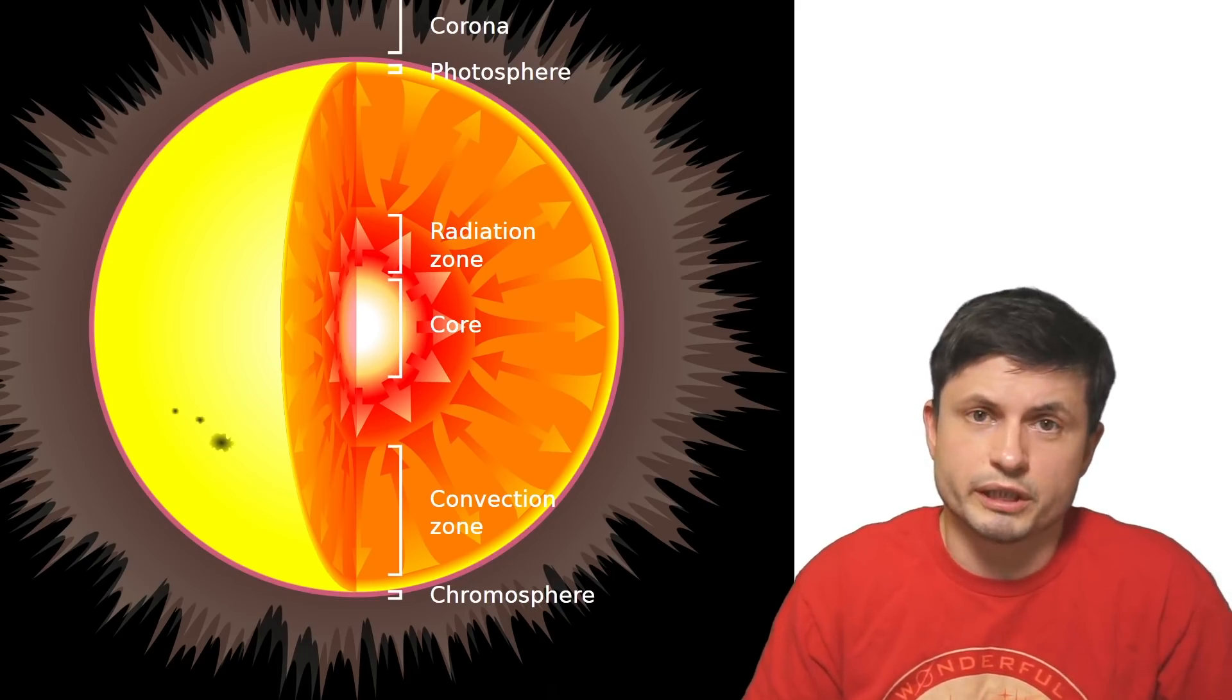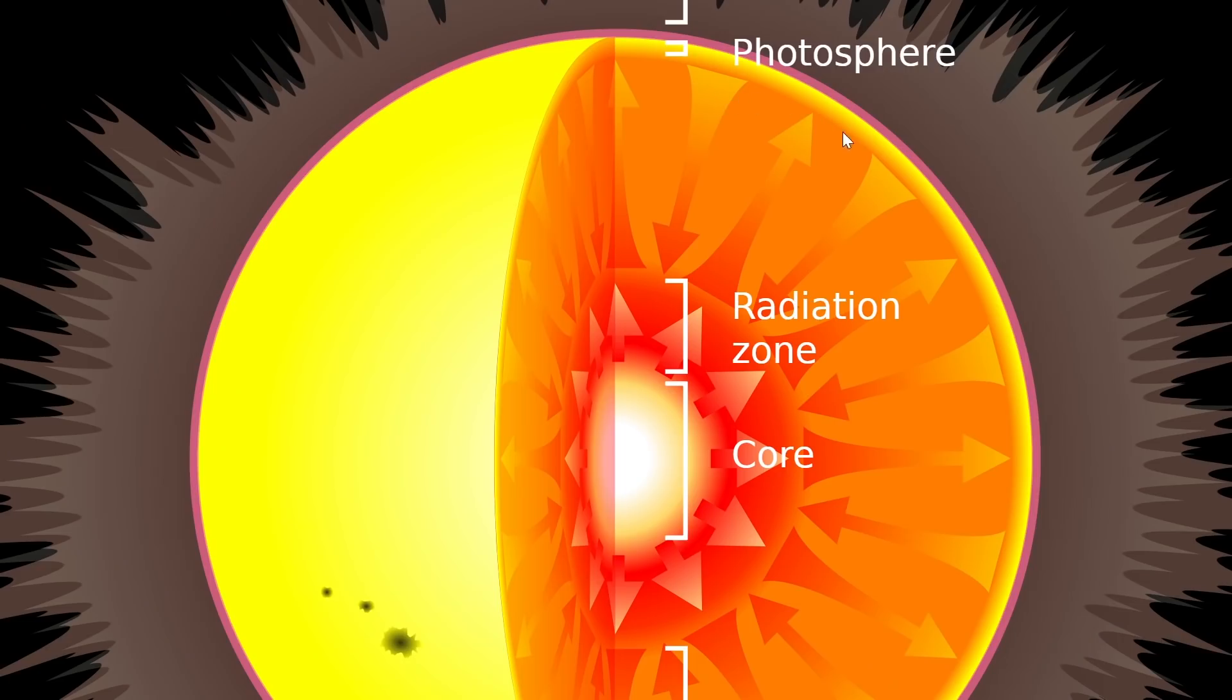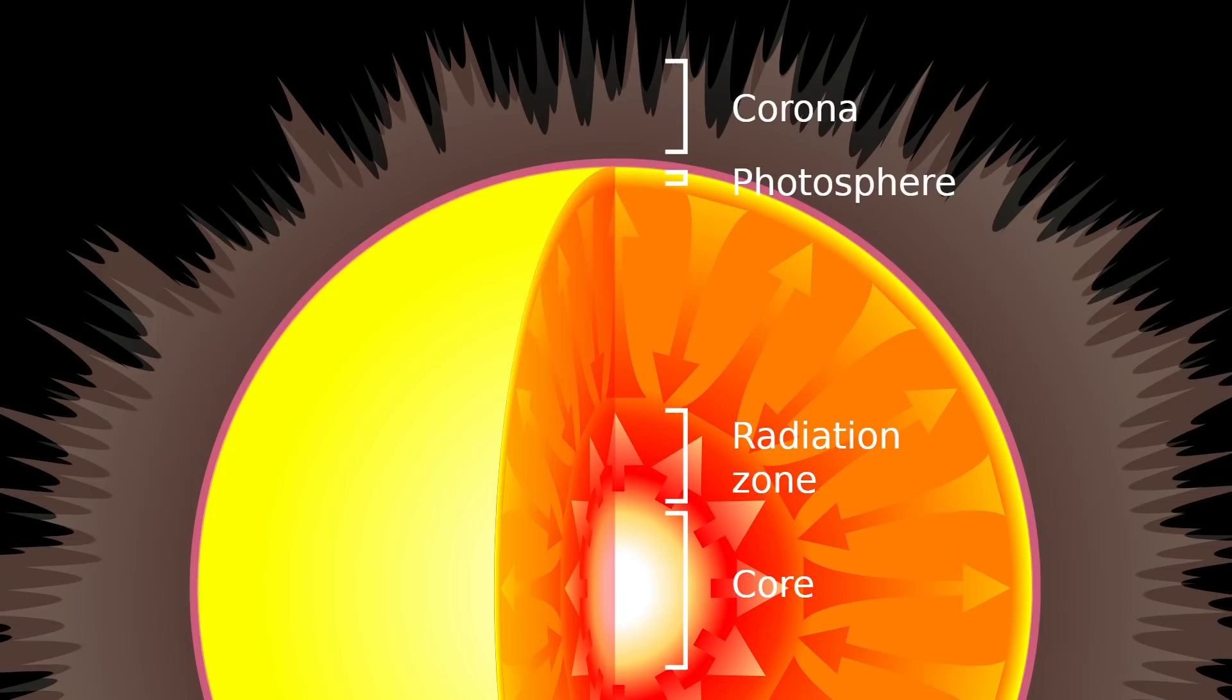Here's another way of looking at this from the side view. In the convective zone a lot of this circulates around producing the cells we see on the surface, and the radiation zone simply radiates the heat away, with the core itself being right in the middle where all of the nuclear reactions occur. But notice how even in this image there's something else right above the photosphere—the corona.